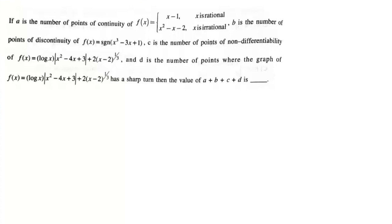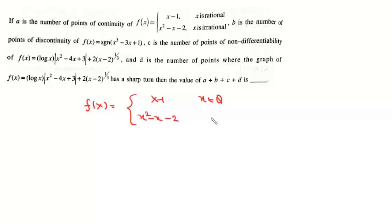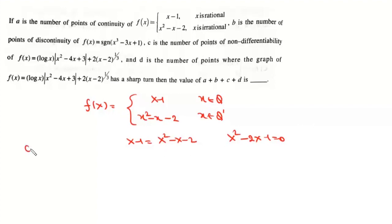Let a = number of points of continuity of f(x), where f(x) = x - 1 when x is rational and f(x) = x² - x - 2 when x is irrational. We equate the two definitions: x - 1 = x² - x - 2. Solving this gives 2 solutions, so the value of a is 2.